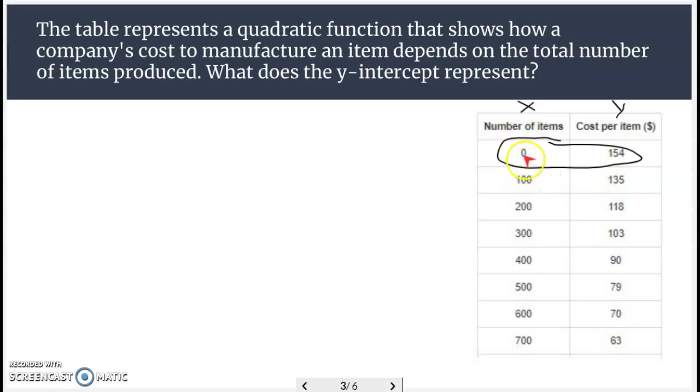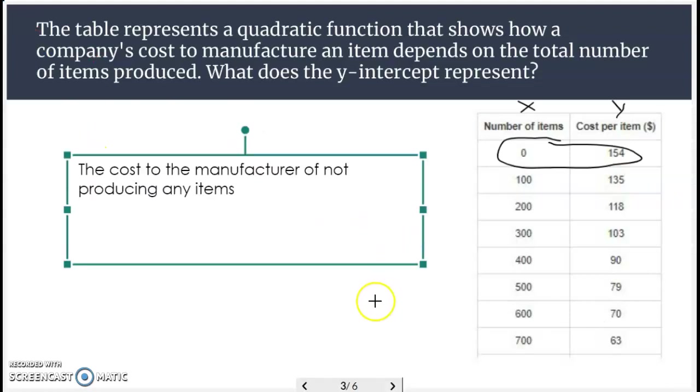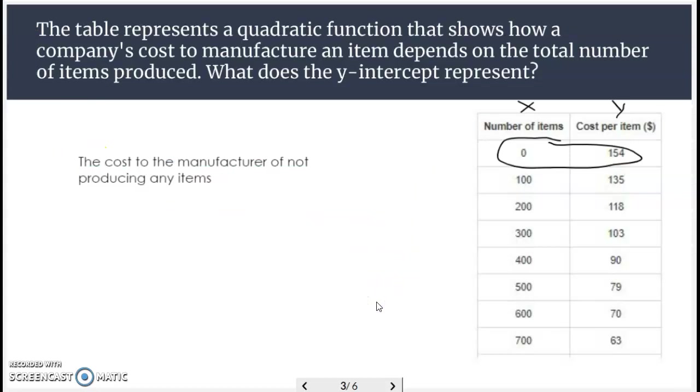But if they don't sell any items, it says it still costs 154. So there's still a cost, and maybe that's manufacturing costs, maybe that's the pay of the workforce, whatever it is. But the y-intercept is the cost to the manufacturer of not producing any items.